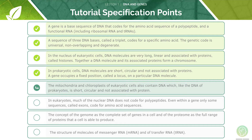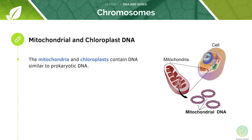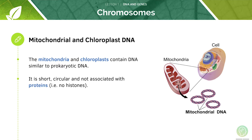Now let's look at mitochondria and chloroplasts. The nucleus isn't the only organelle which contains DNA — mitochondria and chloroplasts will also carry it. This DNA is not associated with histones; instead it is short and circular.